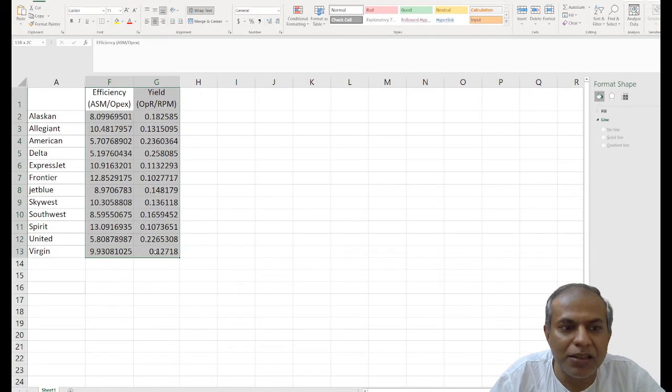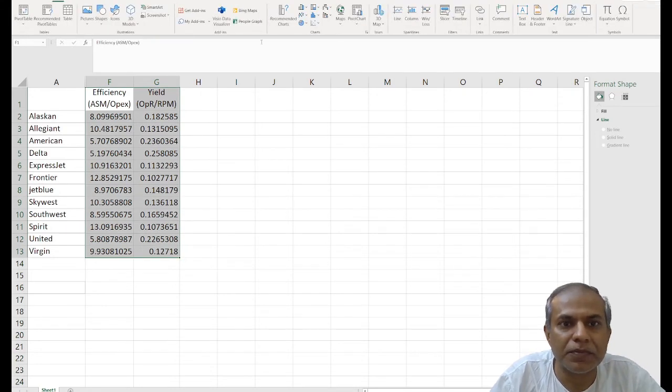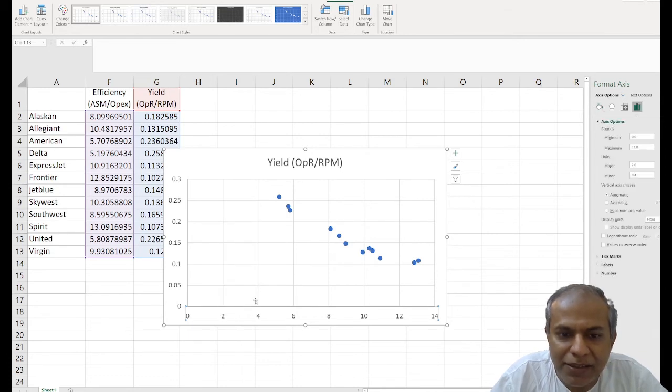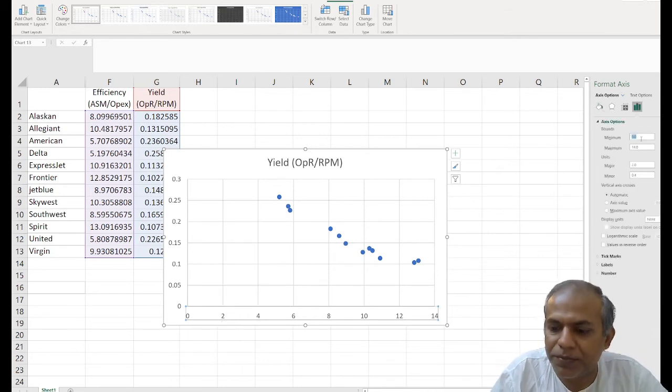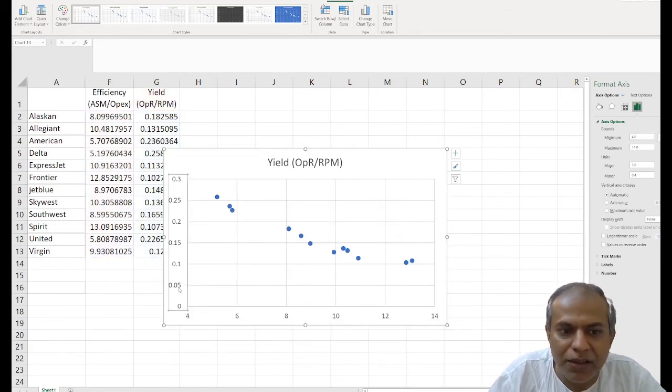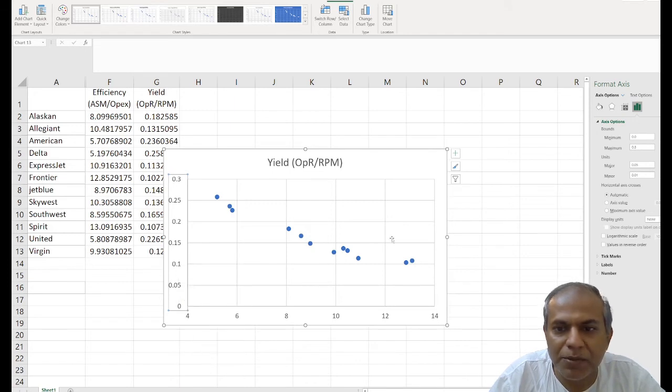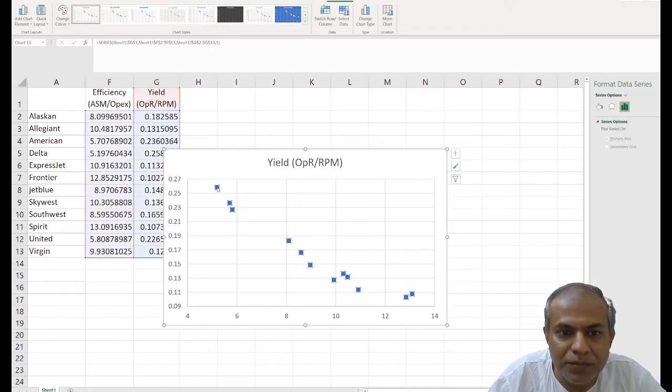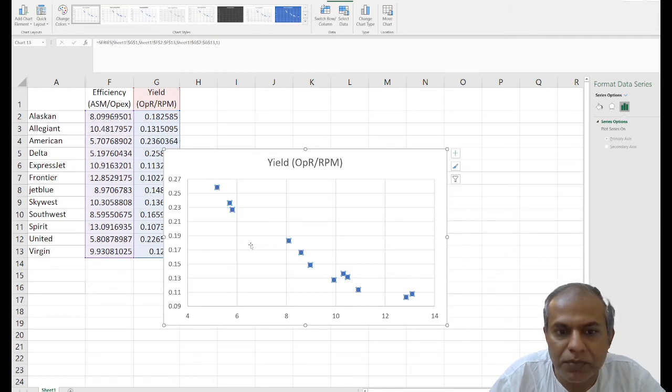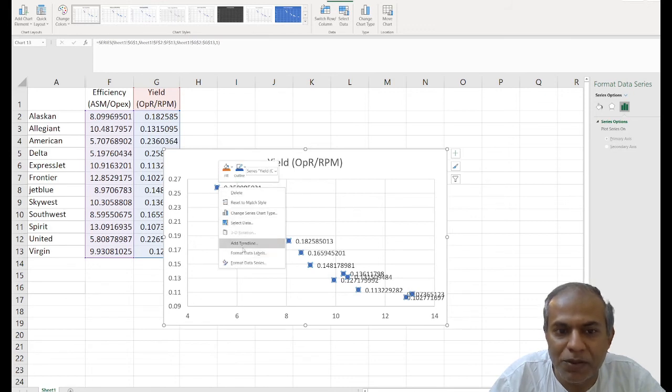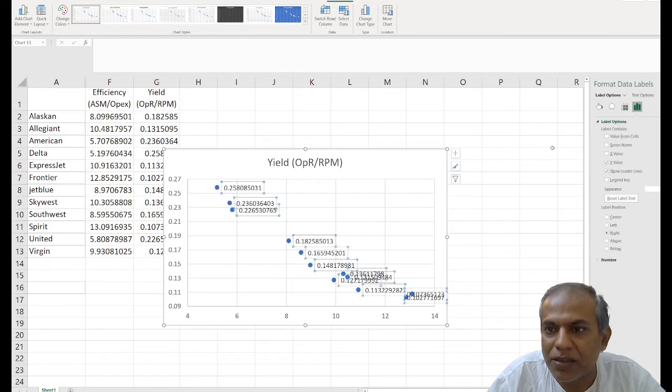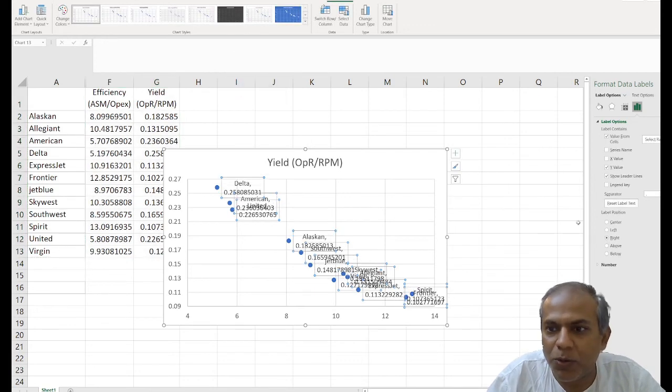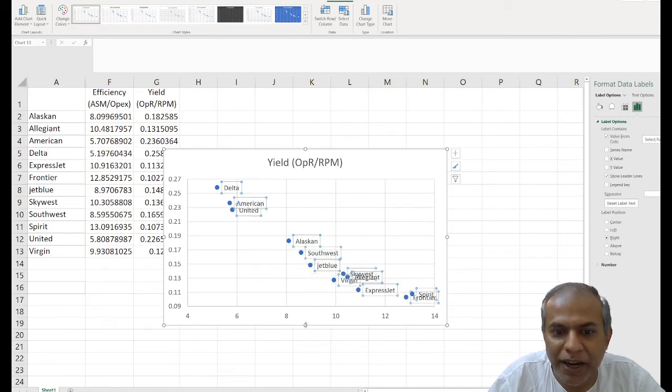I'm going to hide these numbers so that I can map it correctly, and I'm creating a scatter chart. Just to make it clear, I'm going to format the axis. I'm going to start at 4 so I get more space, and this I'm going to start at 0.09. And then I'm going to give you labels. I don't want these labels, I want the names, so I modify data labels and say the data labels should have values from cell. I don't want the y-axis value, and I'm going to drag the graph out so that we get a better view of this information.